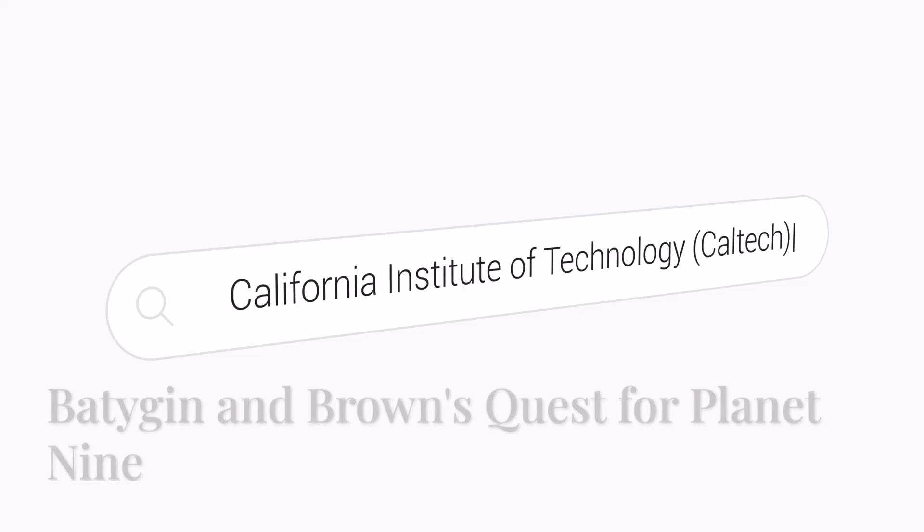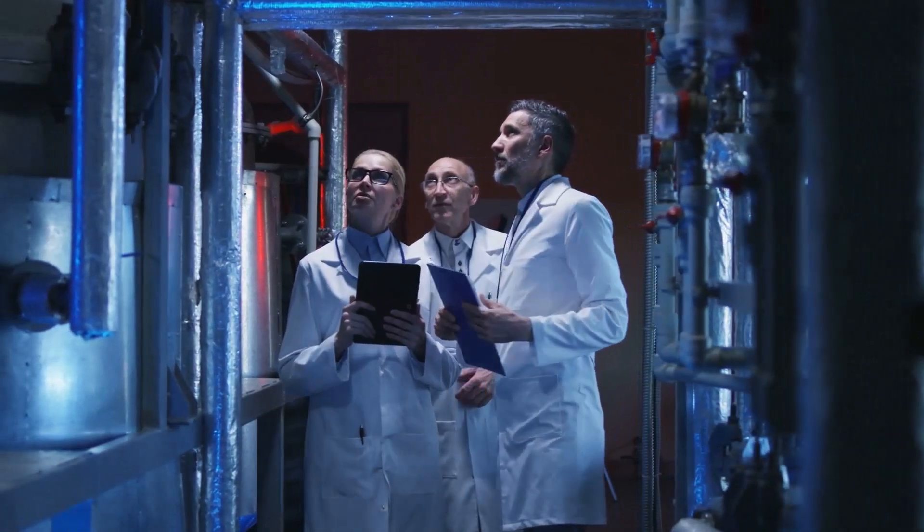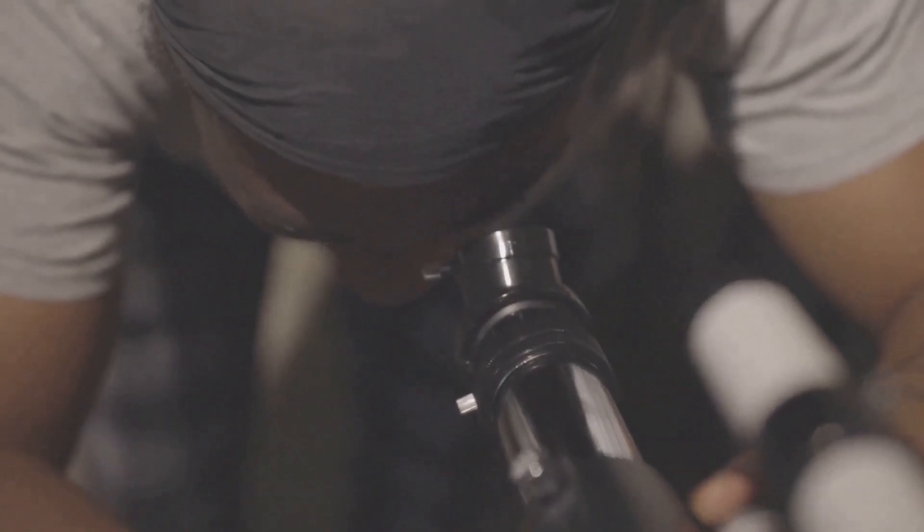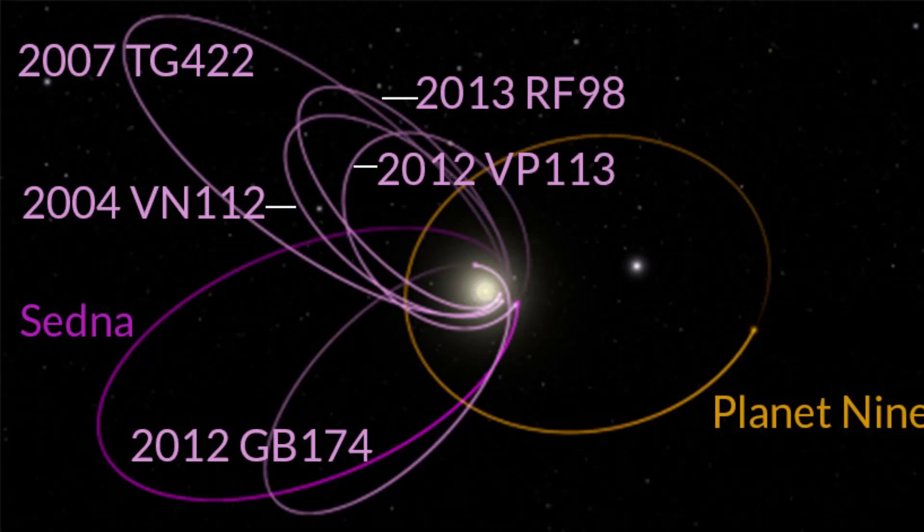In the heart of the California Institute of Technology, two scientists embarked on a quest that would challenge our understanding of the solar system. Konstantin Batygin, a theoretical astrophysicist, and Mike Brown, a renowned astronomer, joined forces to investigate a cosmic anomaly.